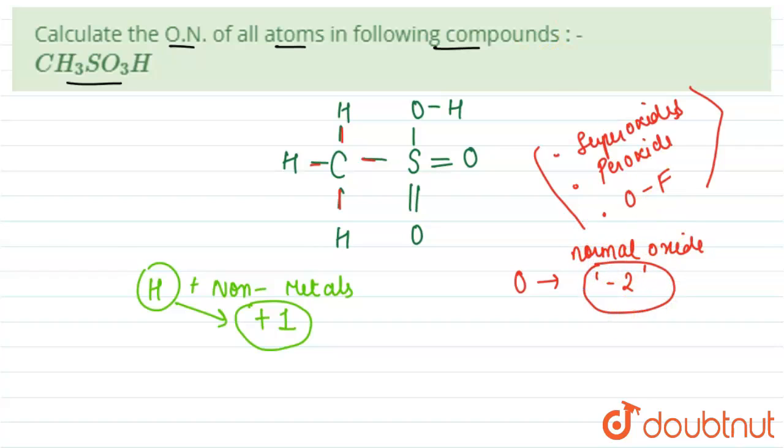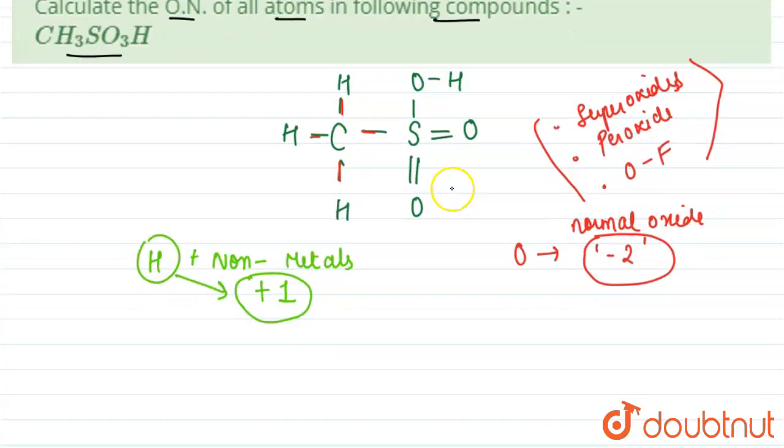oxidation state is minus two. These two things are clear, and the last thing is that carbon shows oxidation state of minus four. So these three oxidation states we know, we